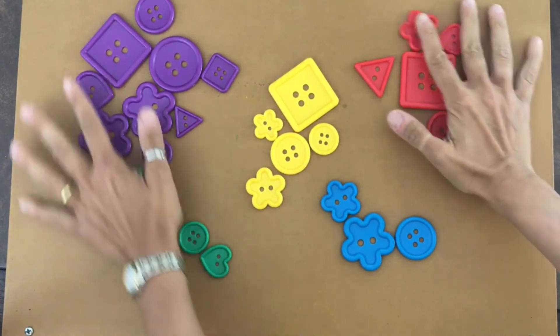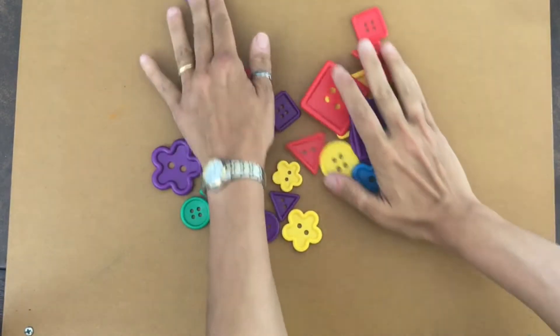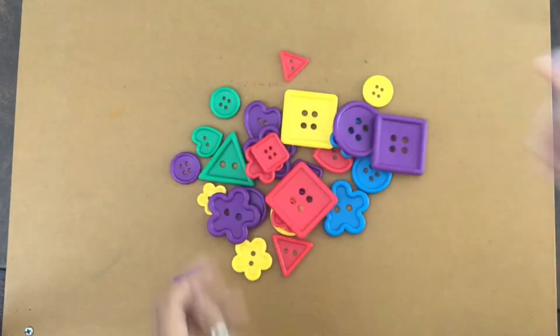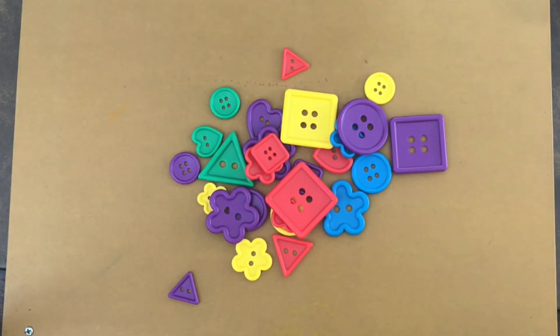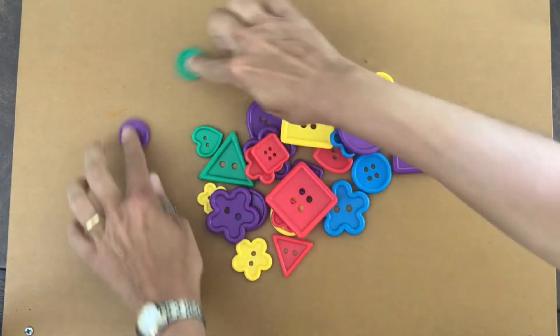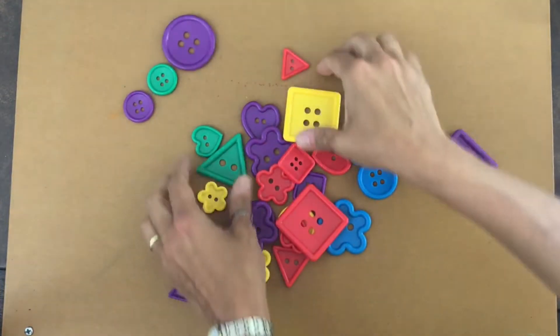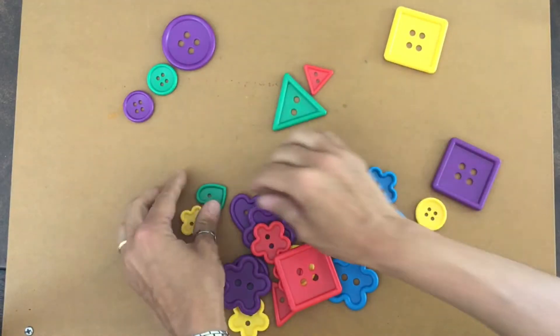I'm gonna mix them all up again. What do you think? What's another way I can sort these? How about if we sort them by shape? All right, let's put the circles together, the squares, the flowers, the triangles together.